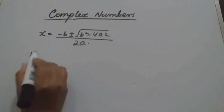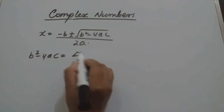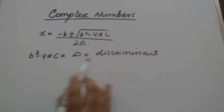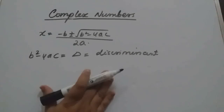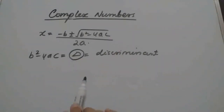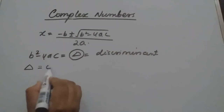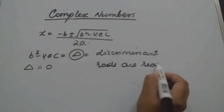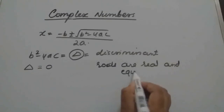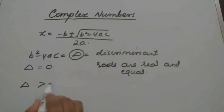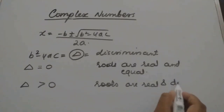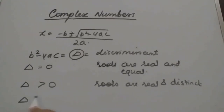So this b square minus 4ac we called the discriminant. The nature of roots is decided by the delta value. If delta equals 0, roots are real and equal. If delta is greater than 0, roots are real and distinct — two different values. If delta is less than 0, roots are not real.